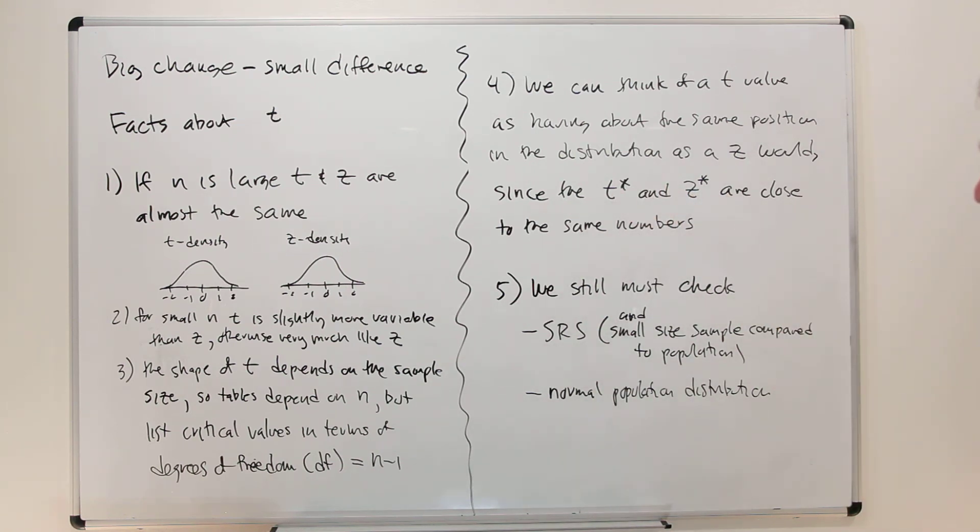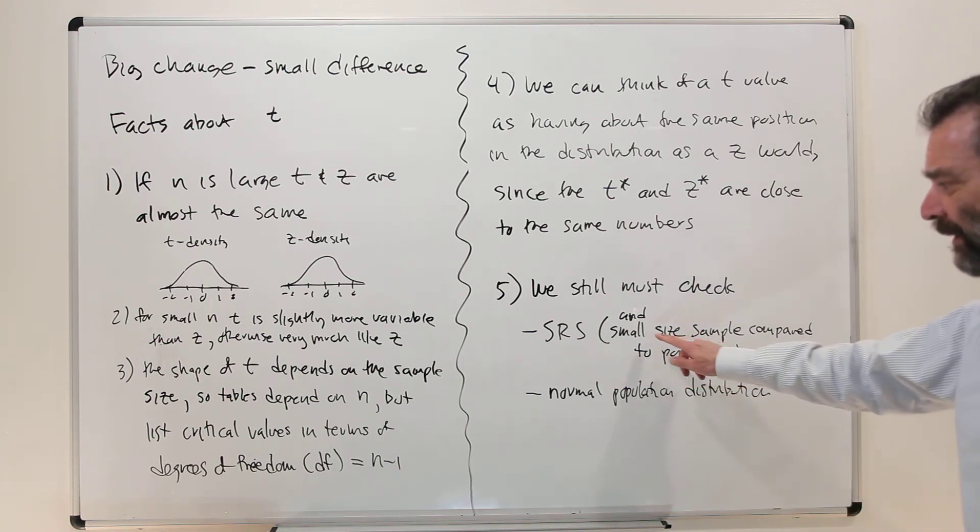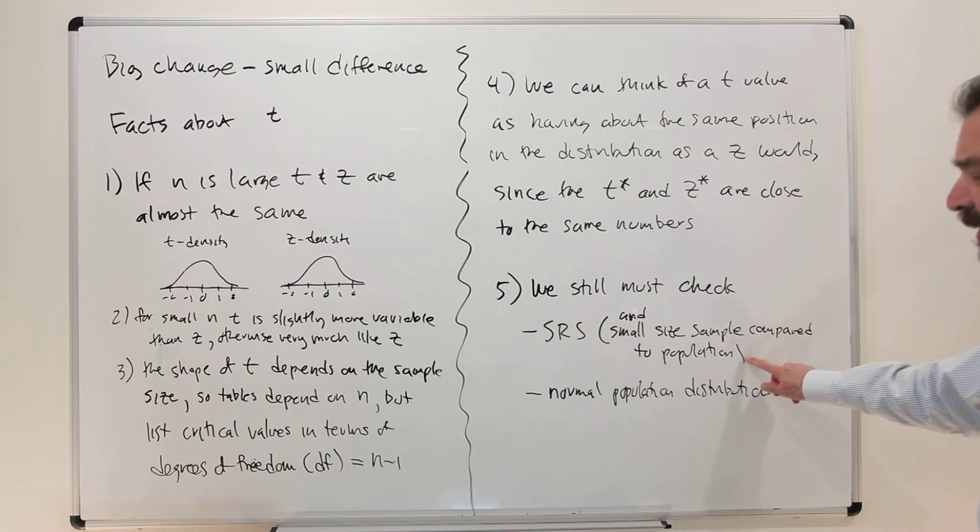We still have to check simple random sampling. And we always check this out too, that the sample size has to be small compared to the population. Or generally that's not a problem. Population is usually huge. Sample size is usually small, like 20 or 40 or something. Population is thousands. Everything is good.